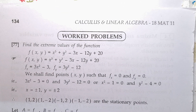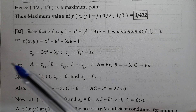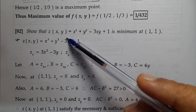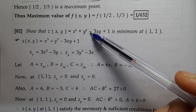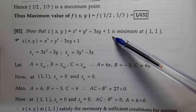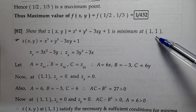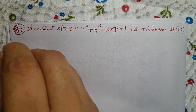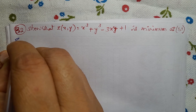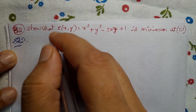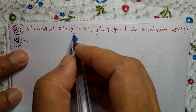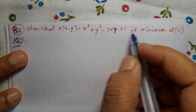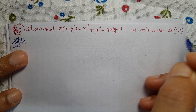Worked Problems. Problem No. 82: Show that Z(x, y) equal to x³ plus y³ minus 3xy plus 1 is minimum at (1, 1). Solution for this problem: Z(x, y) = x³ + y³ - 3xy + 1 is minimum at (1,1).